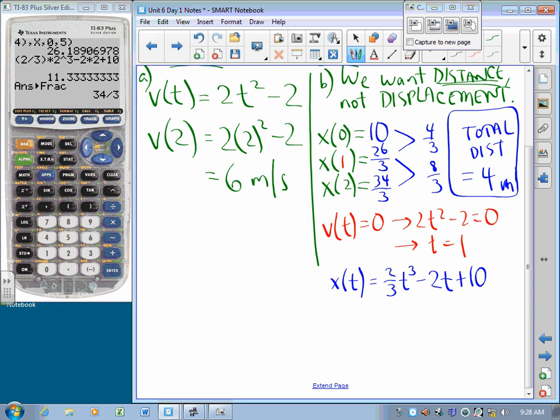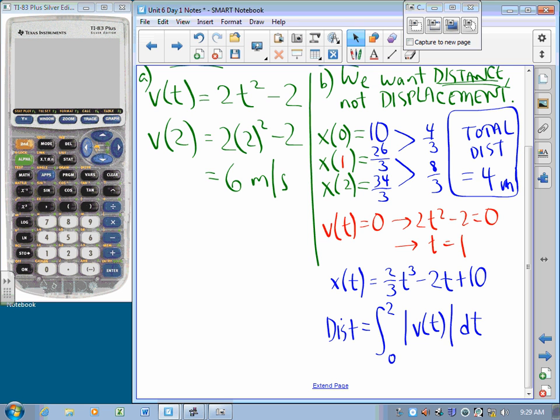We could say that distance is the integral of speed. How do you know what speed is? Because speed is always positive. Well, we just integrate the absolute value of velocity. If we integrate the absolute value of velocity, velocity could be positive or negative, but speed is always positive. So, the absolute value of velocity is always positive.